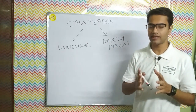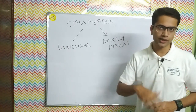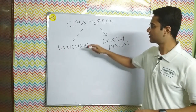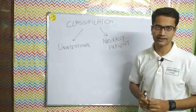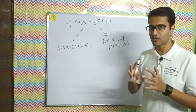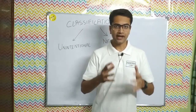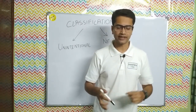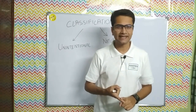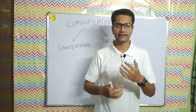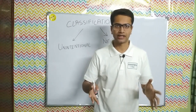Moving on to phase two — the classification of physical hazards. Physical hazards are classified into two subcategories: unintentional physical hazards and naturally present physical hazards. Unintentional physical hazards include metal pieces, plastic pieces, glass pieces, or wooden pieces that enter food during its processing.